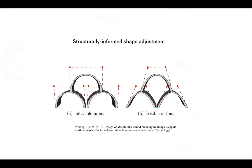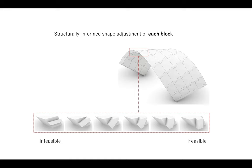I would categorize this project under the topic of structurally informed shape adjustment. For example, the work of Emily Whiting on block assemblages — the overall concept was to change the geometry of an infeasible, structurally invisible model to automatically become feasible using digital tools. Based on this concept, I developed the project of structurally informed shape adjustment of the joints between blocks, keeping the overall geometry of the discrete elements assemblage the same while finding the best and most structurally appealing shape for each block including the joints between them.